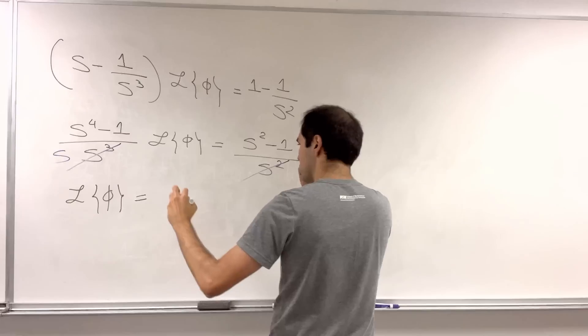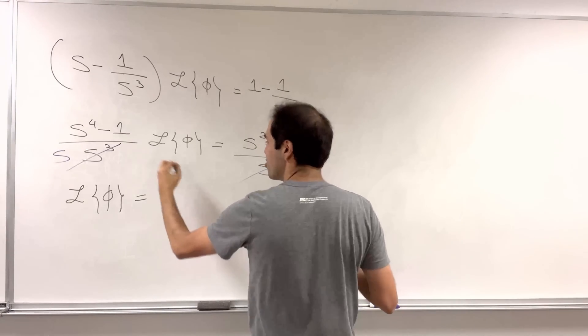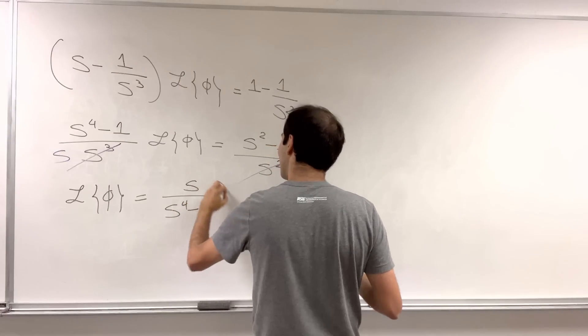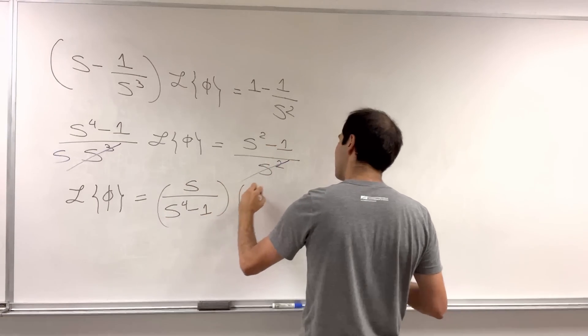so if you do, you know, reverse the denominators, kind of, it becomes s over s to the fourth minus one, times s squared minus one.